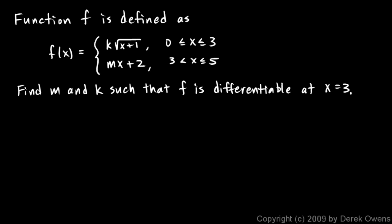In this problem we're told that function f is defined as the following. It's a piecewise function, and when x is between 0 and 3, function f is defined as k times the square root of x plus 1, and when x is from 3 to 5, function f is mx plus 2.